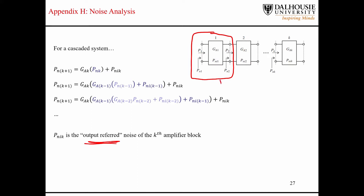For this first block here, you have your main signal power P2, which is going to be P1 times the gain of the first block. Then you have your noise power on the input and your noise power on the output. The noise power on the output is the input noise power multiplied by the gain, as we saw before in Appendix H, where the noise on the input is amplified. But the output referred noise is not amplified — it's just added on.